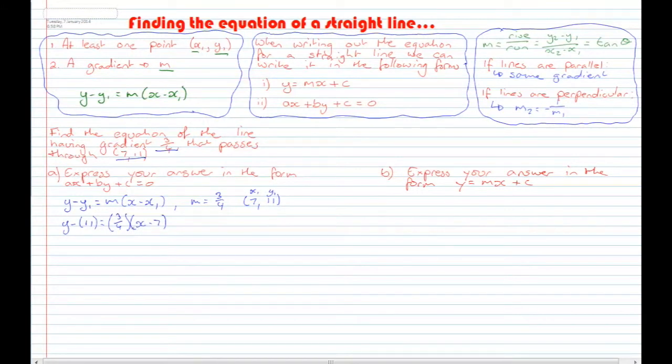Alright, and now let's rearrange in order to get it in the form AX + BY + C = 0. So first of all, we've got this fraction here which is pretty ugly. I don't like this fraction because I think it looks ugly. So let's multiply everything by 4 to get rid of it. So we've got 4 times Y gets you 4Y, 4 times -11 gets you -44.